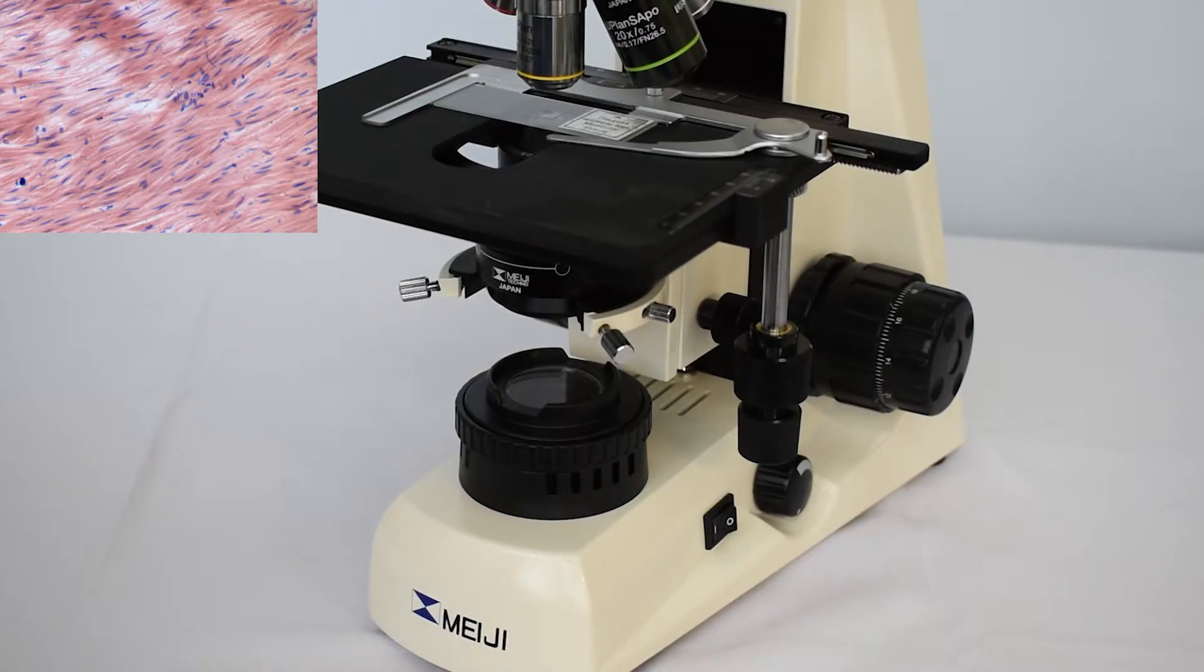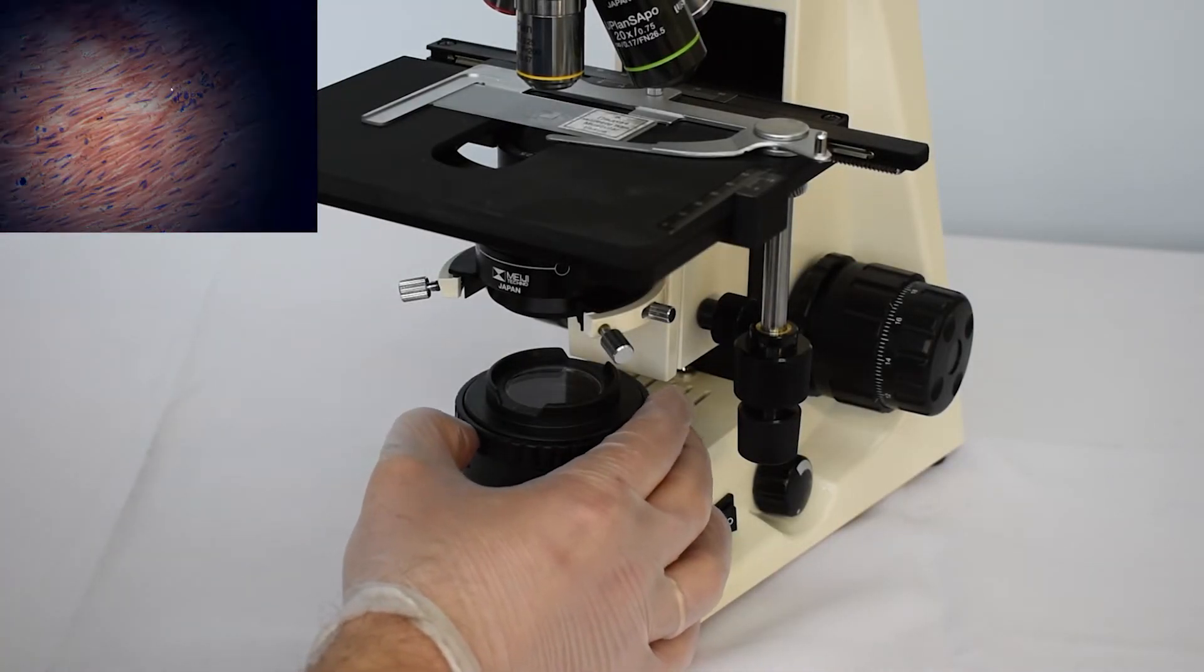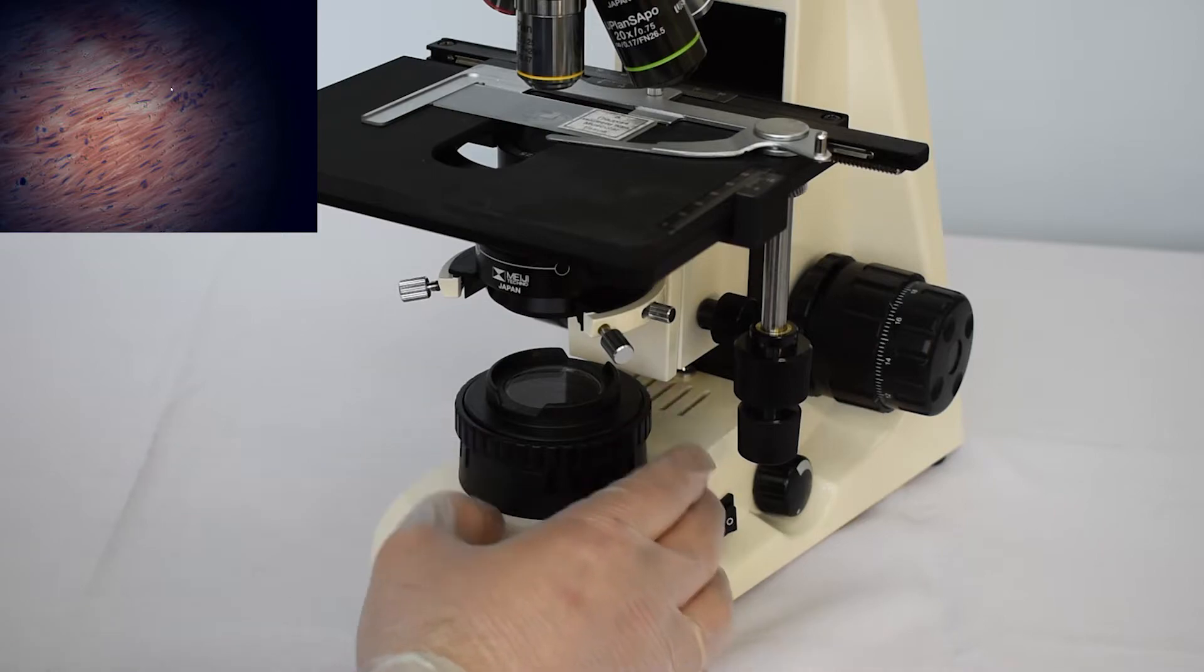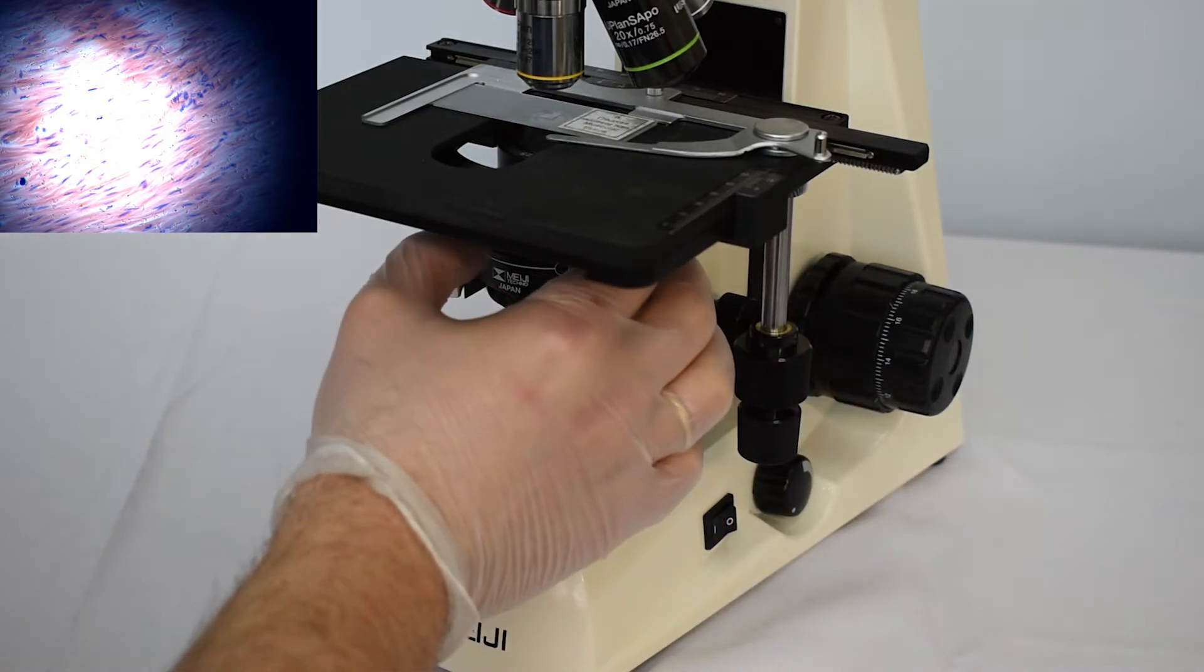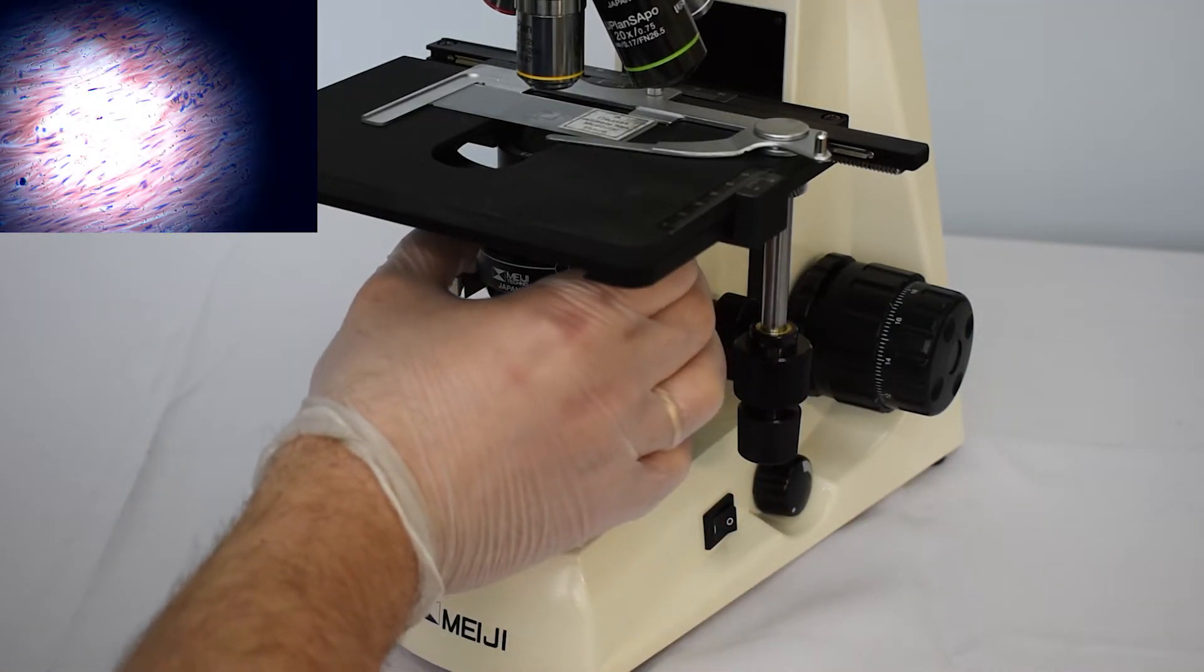Next, close the field diaphragm of the collector lens, increase the light intensity, and close aperture diaphragm of the condenser.